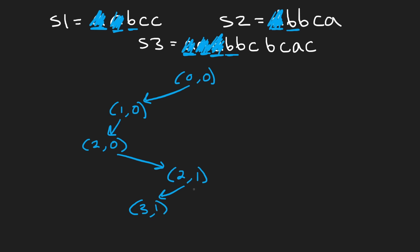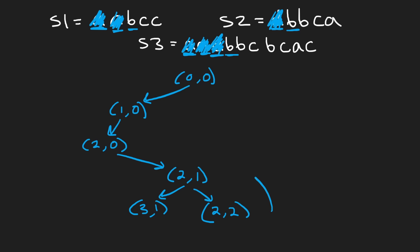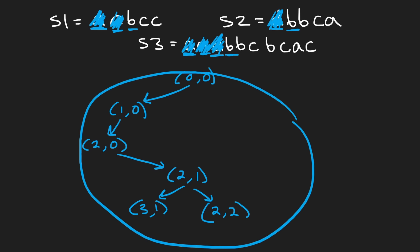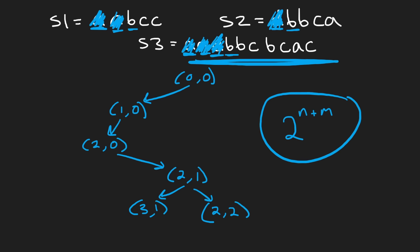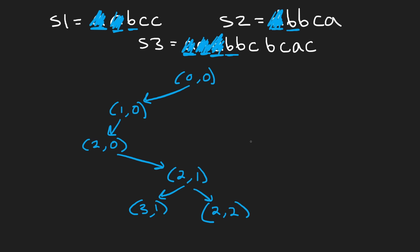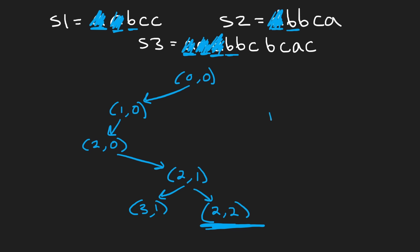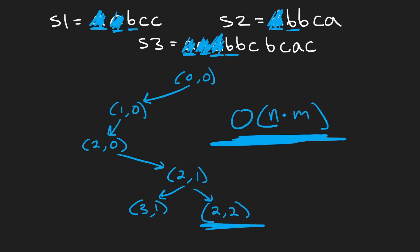We can either do (3, 1) or (2, 2) depending on which string we take the B from. This is where the complexity comes in. In the worst case, we can make two decisions every single time, giving a time complexity of 2 to the power of N plus M. But we might be repeating the same subproblem multiple times — there are only N different values in the first position and M different values in the second, which is where the M times N time complexity comes from.